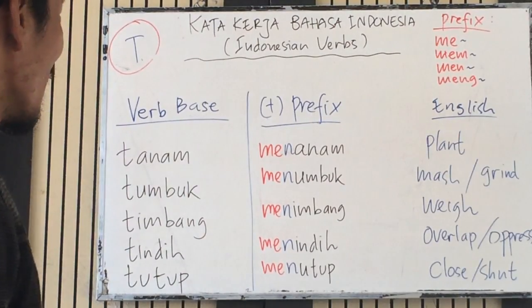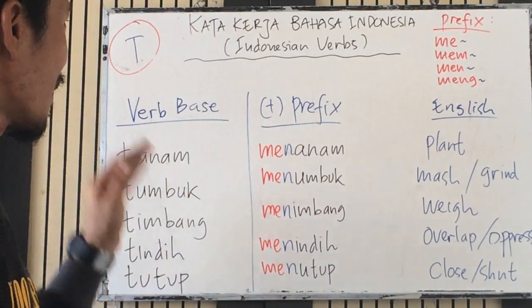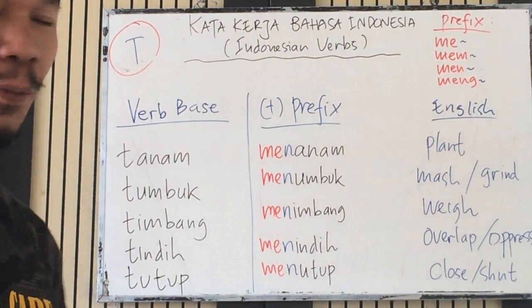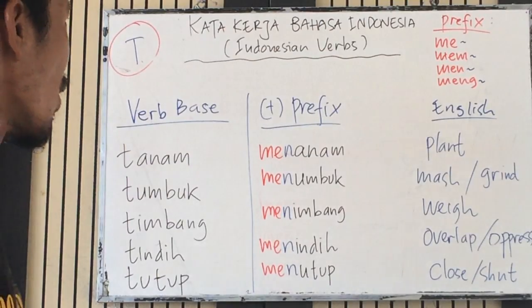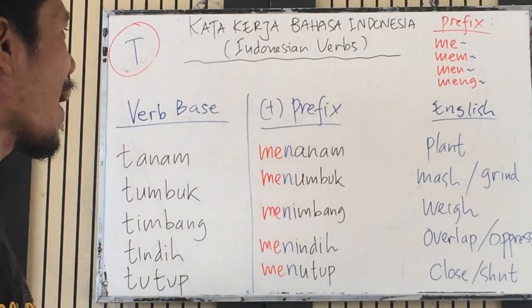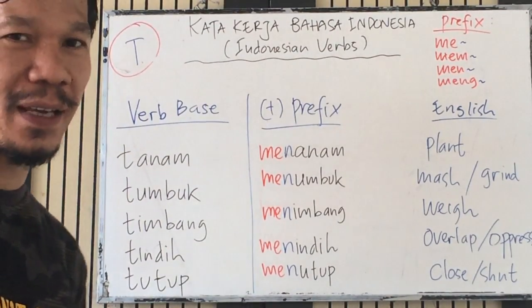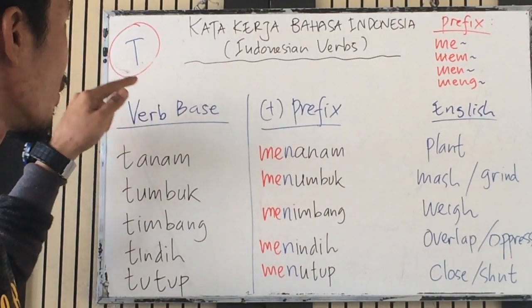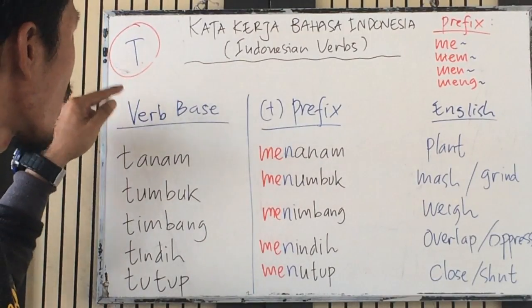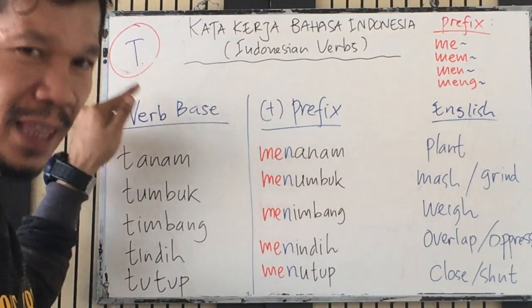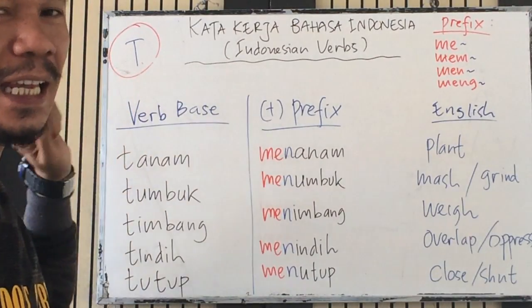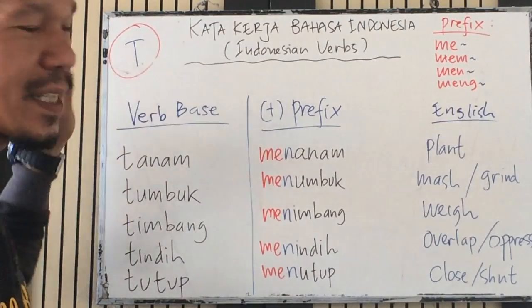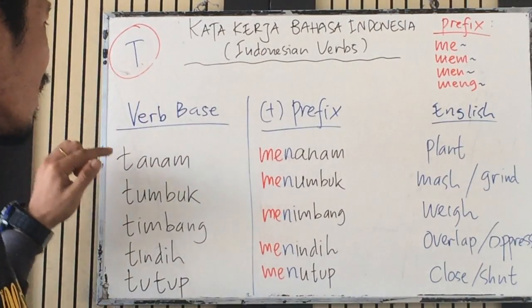Let's continue to add to our vocabulary by knowing the verb base and the prefix. We continue to the first letter: 'T' — in the Indonesian language the sound is 'te'.